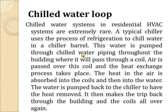The chilled water loop is extremely rare in residential systems. A typical chiller uses refrigeration to chill water in the chiller barrel. This water is pumped through chilled water piping throughout the building, passing through a coil. Air passes over this coil, heat is exchanged from the conditioned space into the water, and this heated water is fed back to the chiller to have the heat removed, and the cycle repeats.